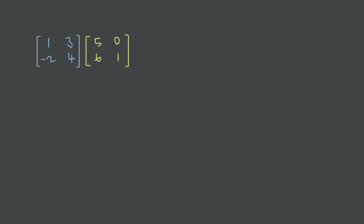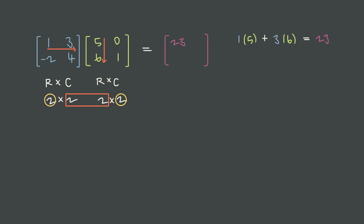Now that we know when we can multiply matrices, let's practice the mechanics. To multiply these matrices, our first step is to determine whether we can — both are 2-by-2, the inner dimensions match, and the outer dimensions tell us the result will be a 2-by-2 matrix. To do the multiplication, we take the product of the first row and the first column: 1 times 5 plus 3 times 6, which gives us 23. Because we're multiplying the first row by the first column, the result goes in the first row and first column.